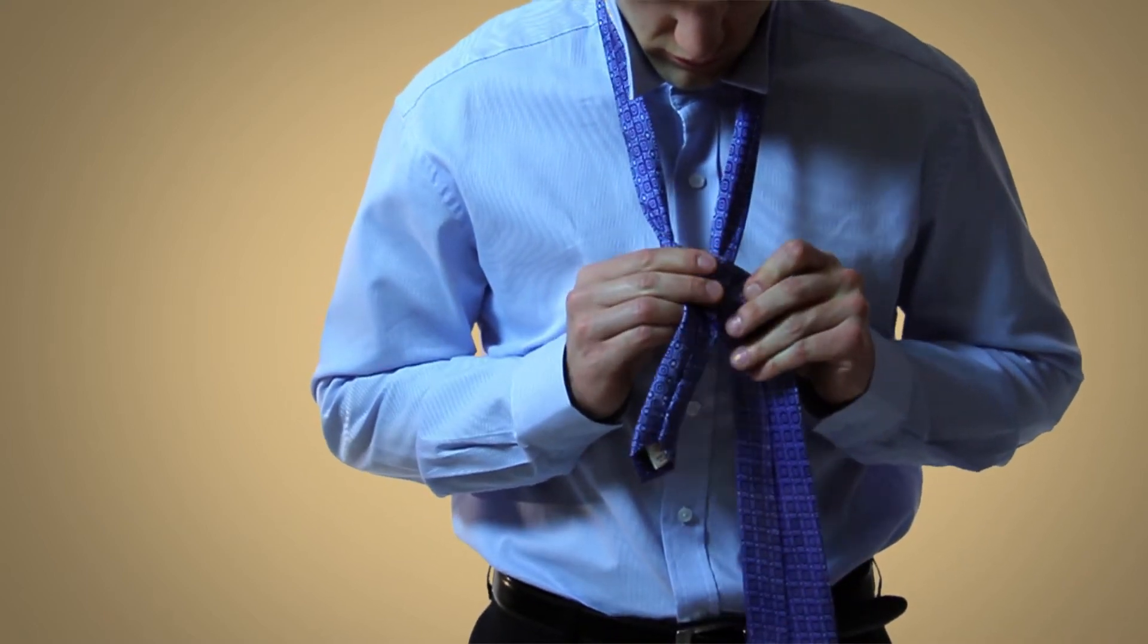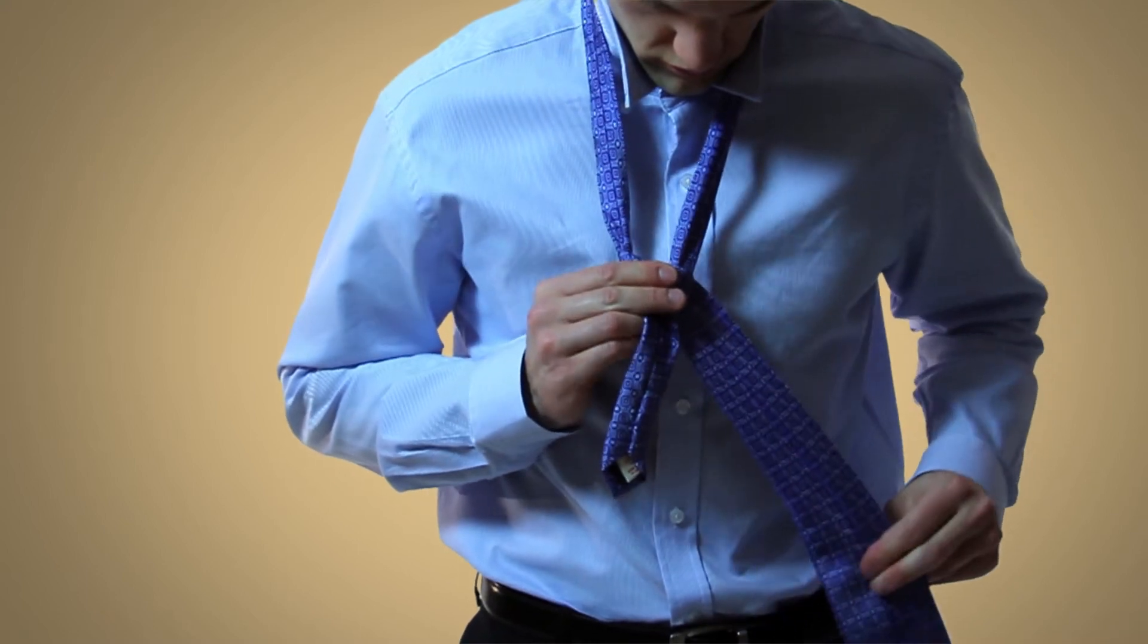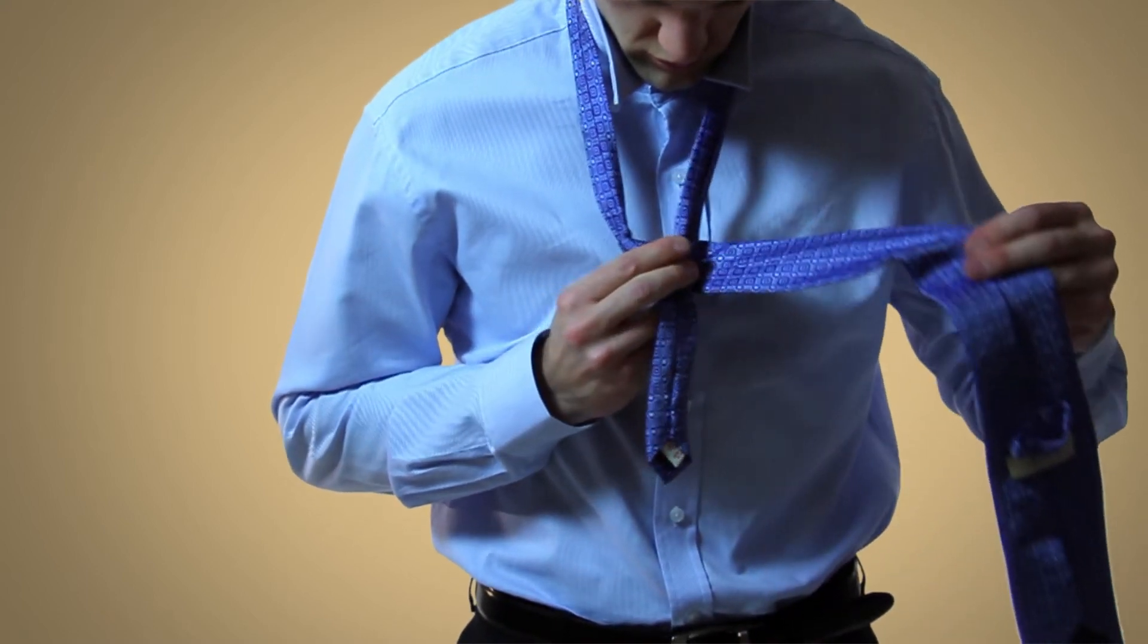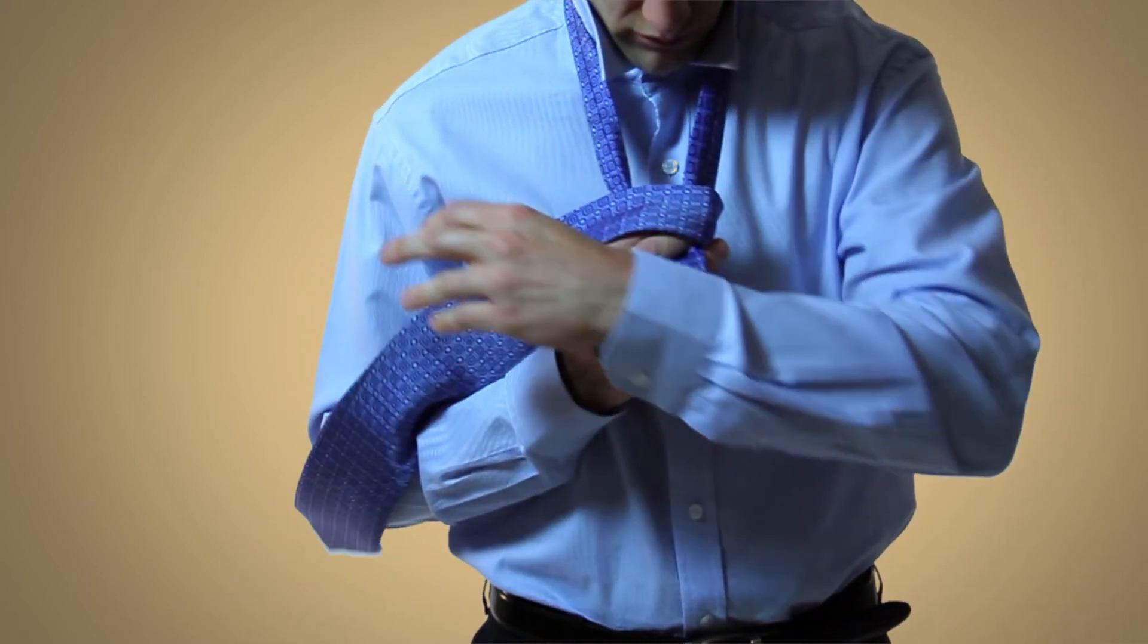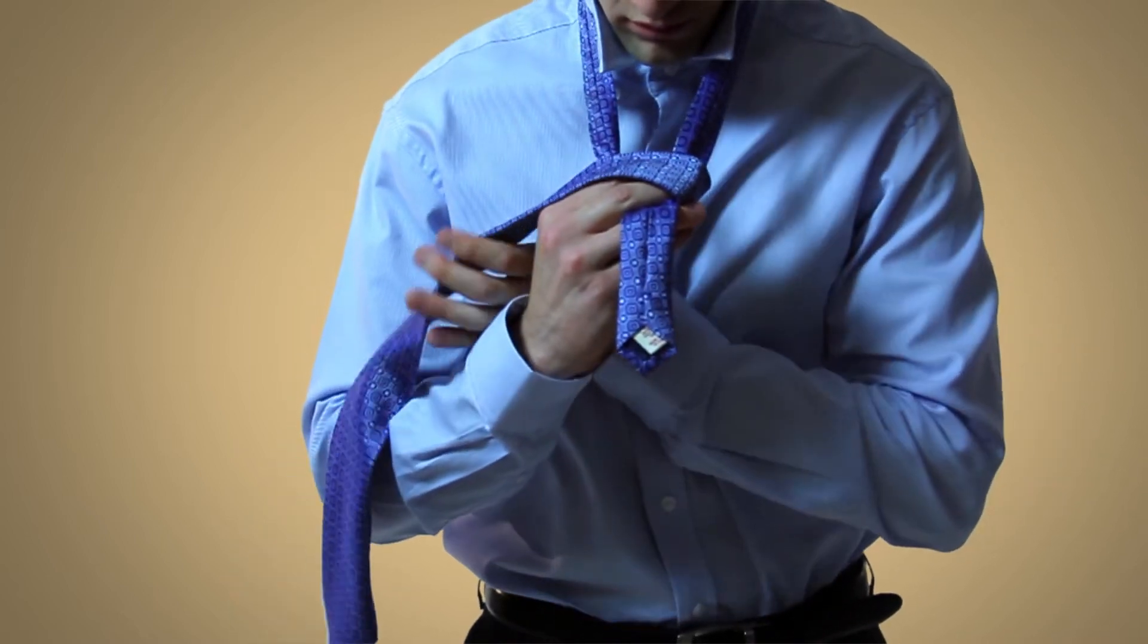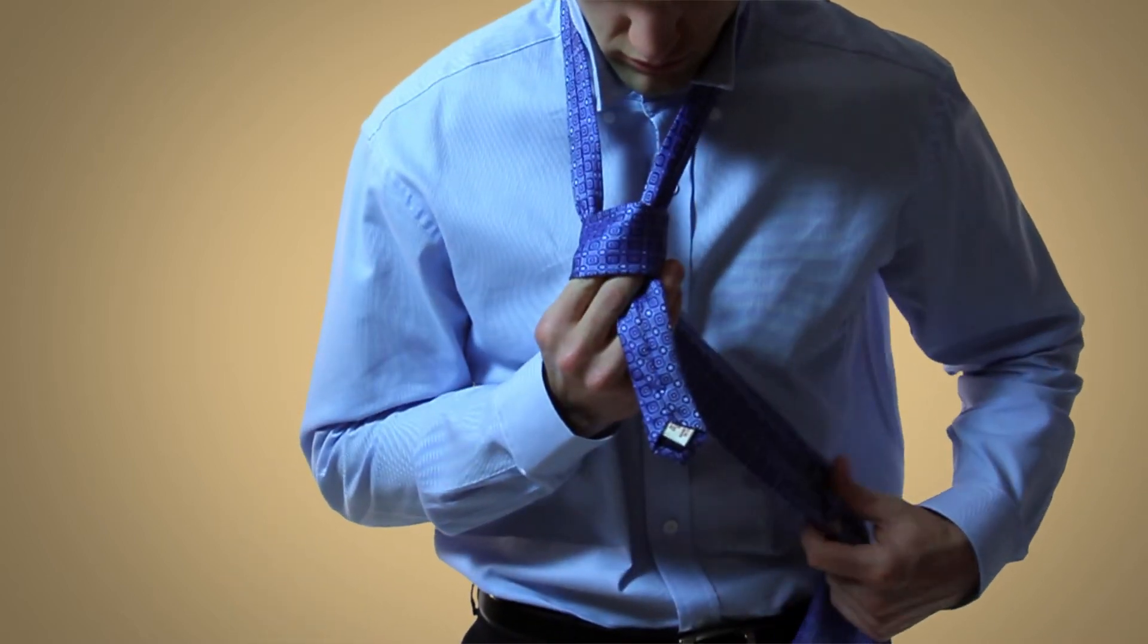Next, you'll want to take the wide end and go over the front of the tie while making a bridge with your two fingers and then bring the wide end of the tie around to the back.